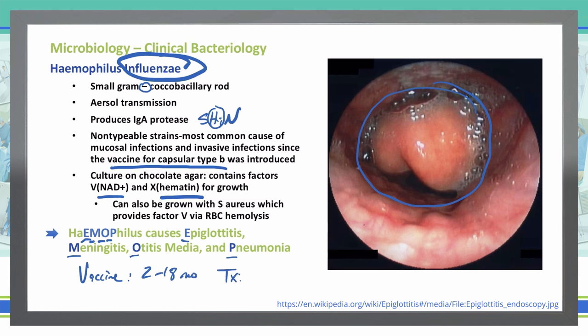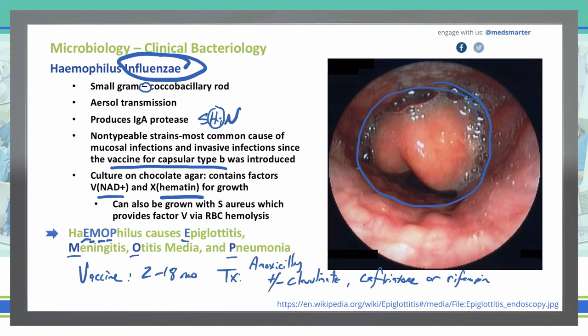We treat mucosal infections such as epiglottitis with amoxicillin with or without clavulanate (augmentin). For meningitis, we use ceftriaxone, because ceftriaxone permeates the blood-brain barrier to help treat meningitis. Rifampin can be used for prophylaxis for those who have had close contact with someone infected with Haemophilus influenzae.